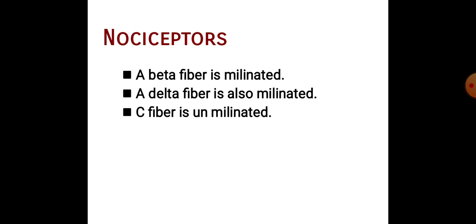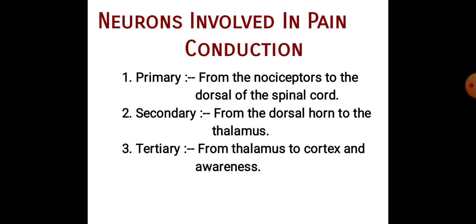Nociceptor fiber types: A-beta fiber is myelinated, A-delta fiber is myelinated, and C fiber is unmyelinated. Neurons involved in pain condition — there are 3: Primary (from the nociceptor to the dorsal horn of the spinal cord), Secondary (from dorsal horn to thalamus), and Tertiary (from thalamus to cortex, producing awareness).